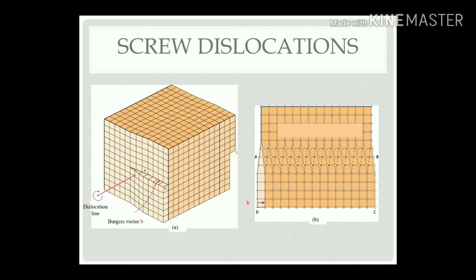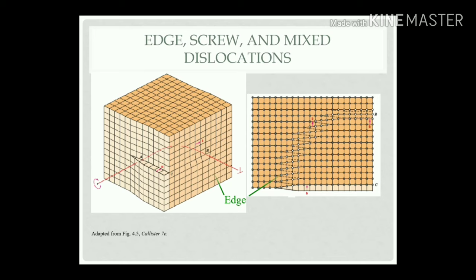In screw dislocations, if an edge dislocation is present and a torsional effect is applied, the dislocation moves in a helical manner. The Burgers vector is the distance measured from one atom to another when line dislocations are present. In the case of edge dislocation, the Burgers vector is perpendicular to the dislocation line; in screw dislocations, it is parallel to the dislocation line. If both components are present — subject to torsional as well as shear stress — it is called a mixed dislocation.